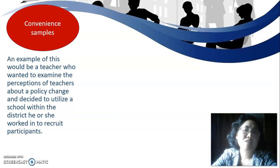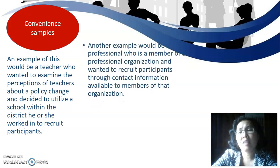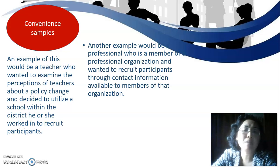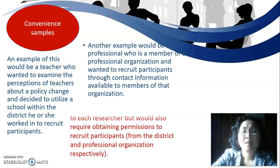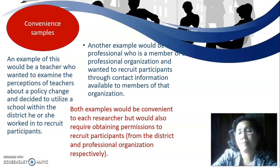An example of convenience sampling would be a teacher who wanted to examine teachers' perceptions of a policy change and decided to use the school within the district where he or she worked to recruit participants. Another example would be a professional who is a member of a professional organization and recruited participants through contact information available to members of that organization. Both examples require obtaining permission to recruit from the district or organization respectively.